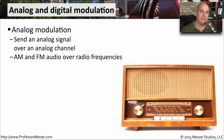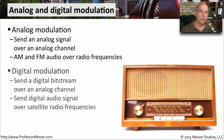We also use two different ways to send data across these mediums: analog modulation and digital modulation. For analog modulation, we are simply sending an analog signal over an analog channel, very commonly seen with AM and FM radio communications. We can also communicate via digital modulation, where we're sending a digital signal over what is originally an analog channel — as seen in satellite radio, where you receive a digital signal sent over a wireless analog channel.